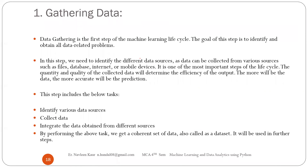The very first step is gathering the data. The main goal is to identify and obtain all data related to the problem. Your data at the end is going to solve some problem, so whatever data related to that problem is available, you try to collect it. Gathering means collection of the data — what data you want to feed. If I want to predict the weather, I have to feed weather data, not road data.